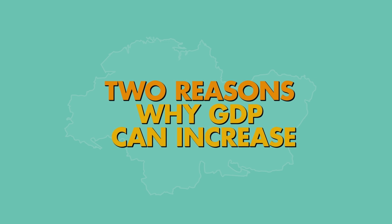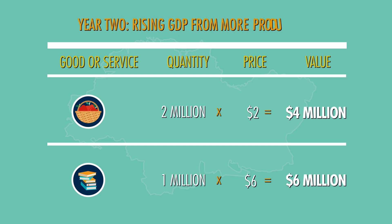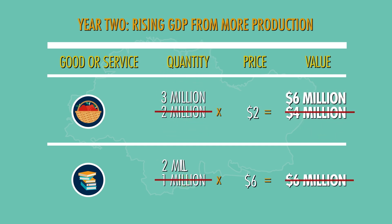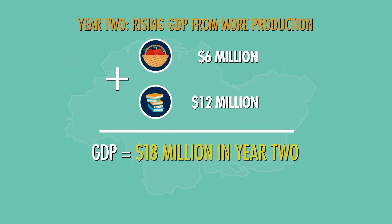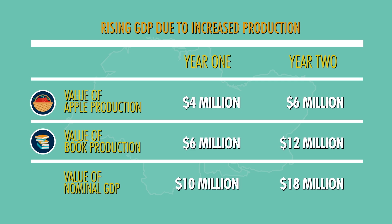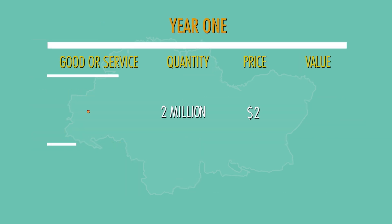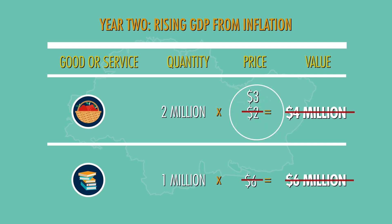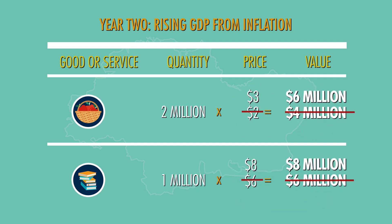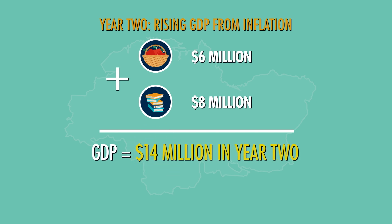There are two reasons why the value of a country's gross domestic product can increase from one year to the next. First, the total value of the country's output might go up because it has increased the quantity of goods and services produced. Even though prices do not change in year two, GDP increases to 18 million dollars because more apples and books are produced. Second, the total value of the country's output can increase because of inflation, which is a rise in the overall price level of goods and services. Inflation may boost the value of GDP even if the economy does not produce more goods and services.